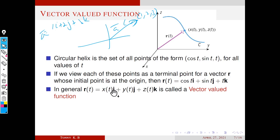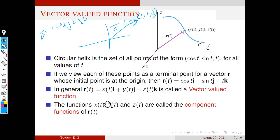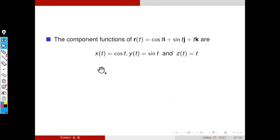In general, we can define a vector-valued function as r of t equal to x of t i plus y of t j plus z of t k. The functions x of t, y of t, and z of t are called the component functions of r of t. For the circular helix, the component functions are x of t equal to cos t, y of t equal to sin t, and z of t equal to t.